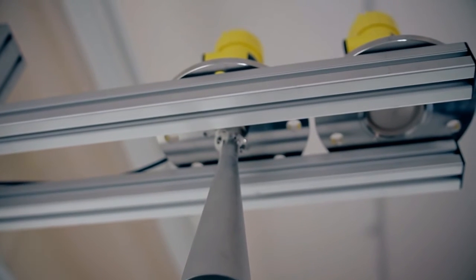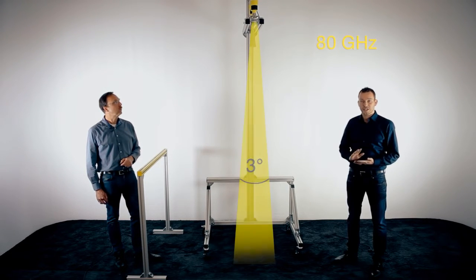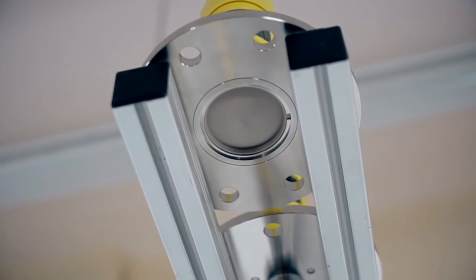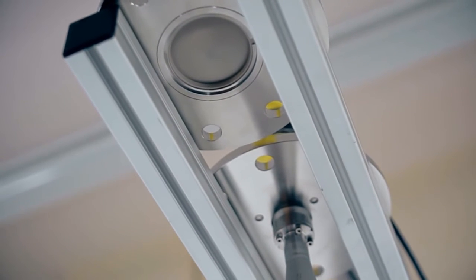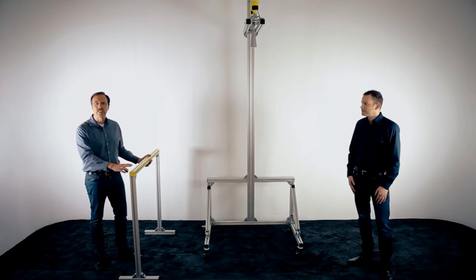Directly in the front we have installed a Vega Pulse 69, our radar transmitter for bulk solids with 80 GHz and we have a beam angle of only 3 degrees. To simulate the reflection we have a metal bracket here and we put it closer and closer to the center of the sensors.